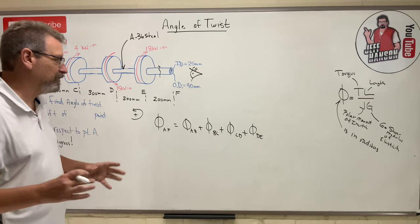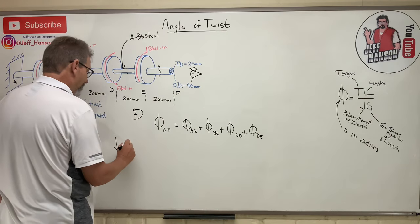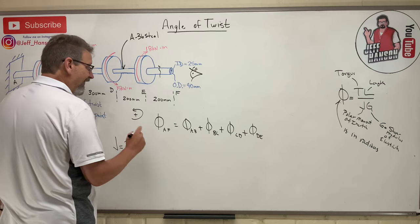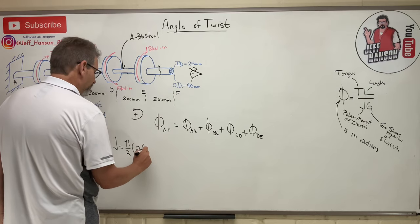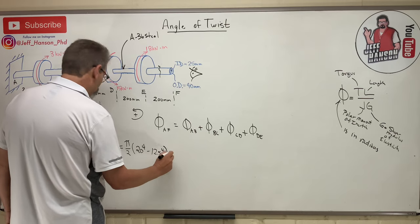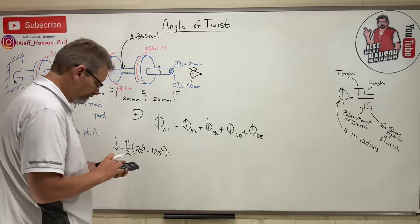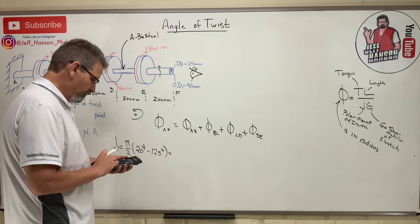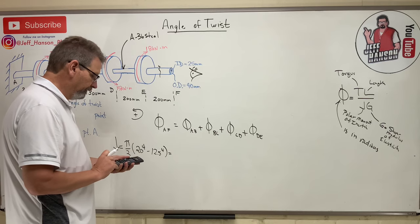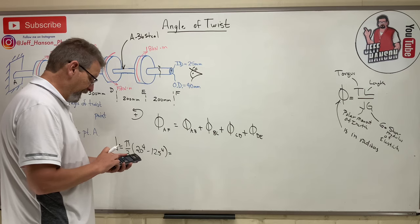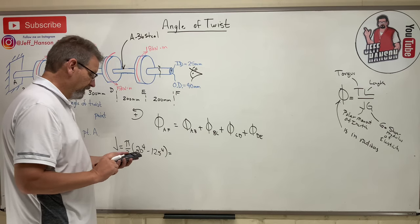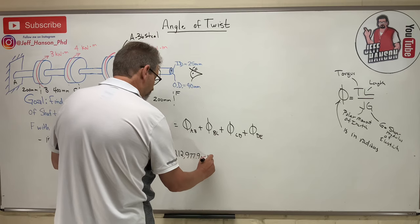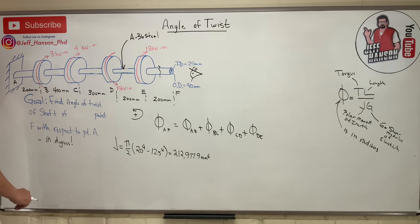Let's calculate things that won't change. J equals π/2 times (r_outer⁴ minus r_inner⁴), which is π/2 times (20⁴ minus 12.5⁴). Calculating: 20 to the fourth minus 12.5 to the fourth, times π divided by 2, equals 212,977.9 millimeters to the fourth.